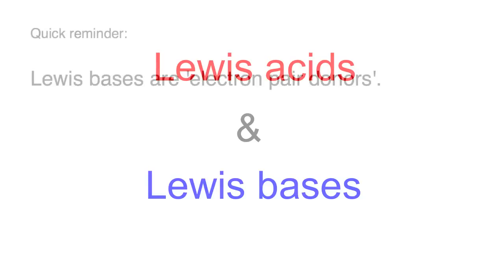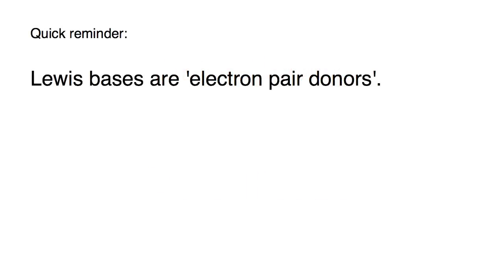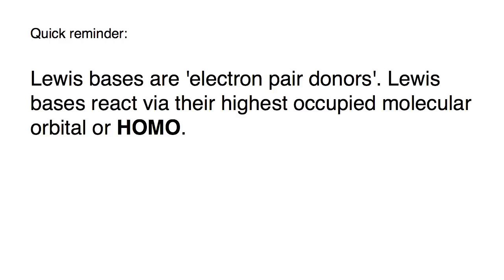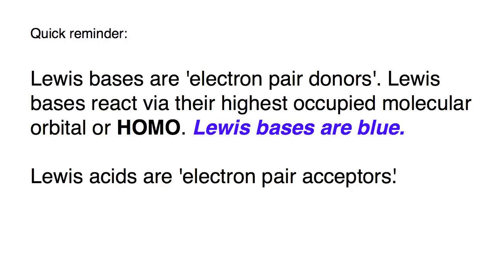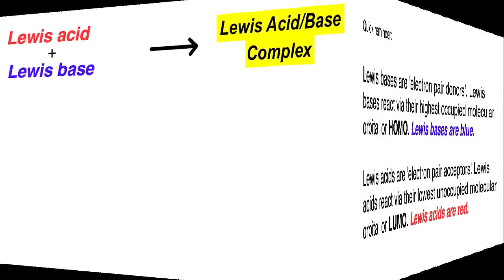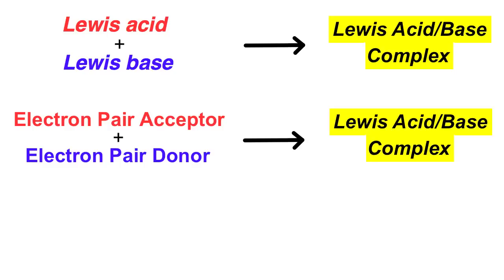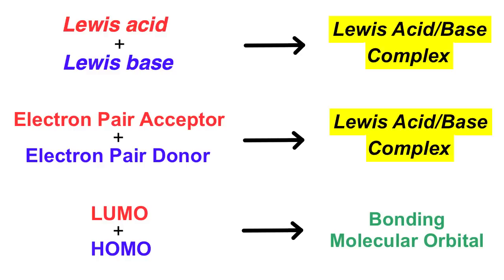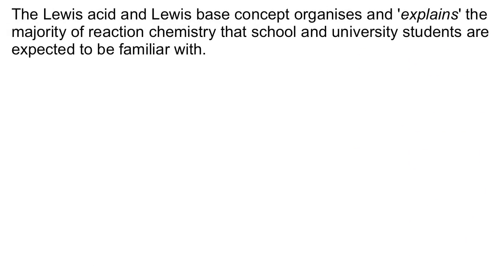Lewis acids and Lewis bases — a quick reminder. Lewis bases are electron pair donors and react via their highest occupied molecular orbital, or HOMO. In the Chemogenesis analysis, Lewis bases are coloured blue. Lewis acids are electron pair acceptors and react via their lowest unoccupied molecular orbital, or LUMO. Lewis acids are coloured red. Lewis acid plus Lewis base gives a Lewis acid-base complex: a HOMO plus a LUMO gives a bonding molecular orbital or Lewis acid-base complex. The Lewis acid-base concept explains the vast majority of chemistry that school and university students are expected to be familiar with.